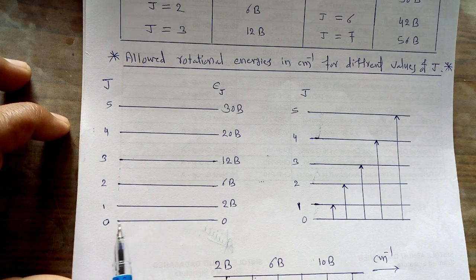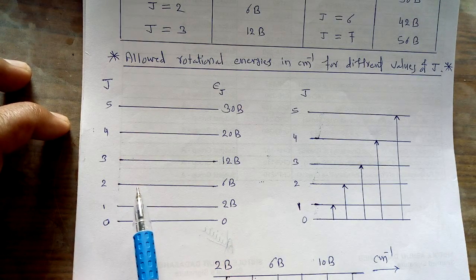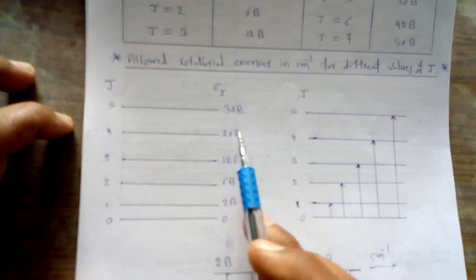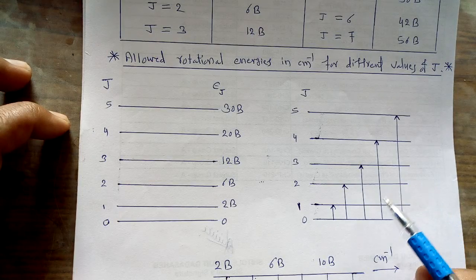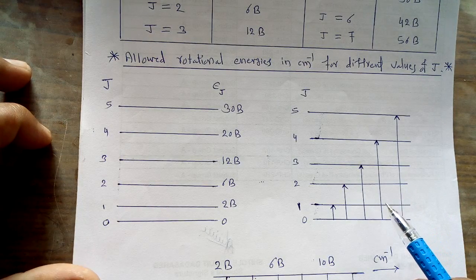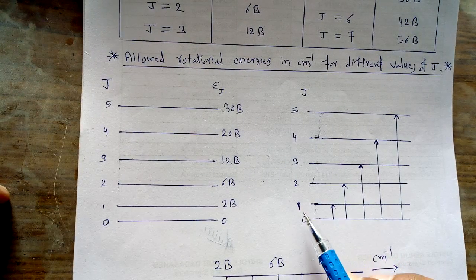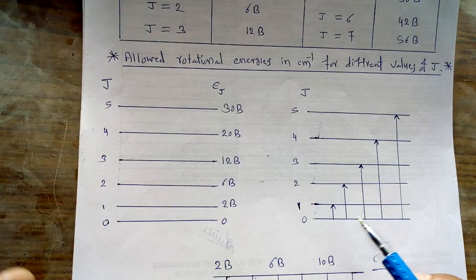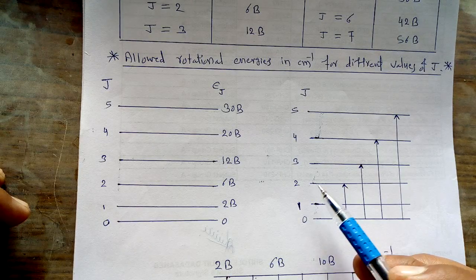For J = 0, the energy is 0. For rotational quantum number J = 1, the energy is 2B. These are the different allowed rotational energies for a diatomic molecule with their respective values of ε_J. These are called the allowed rotational energy levels. Looking at figure (b), it shows the different allowed transitions possible for a diatomic molecule — first, the transition from J = 0 to J = 1, and then J = 0 to J = 2.